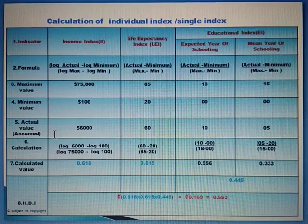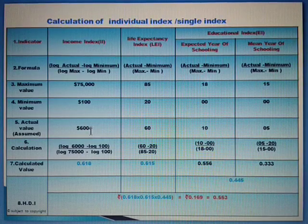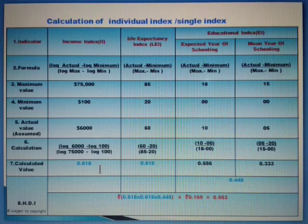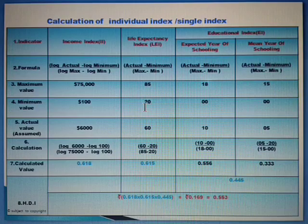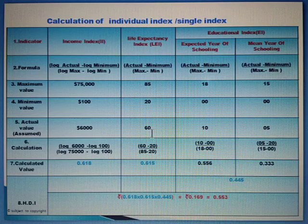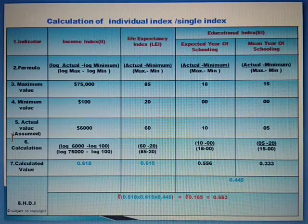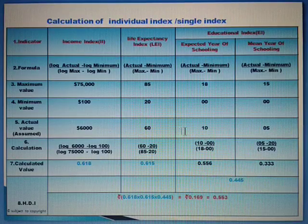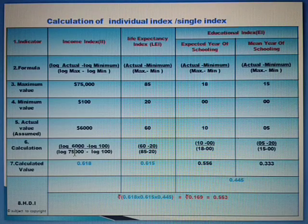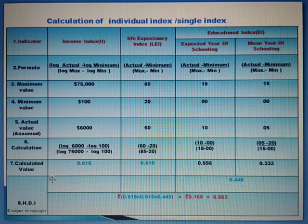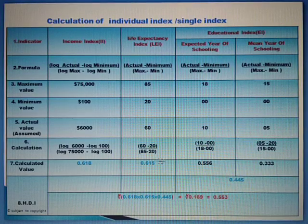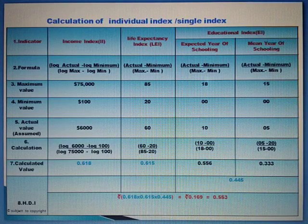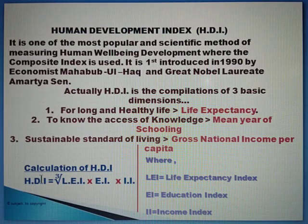With these maximum and minimum values, if we know the actual value of a particular region we can easily find out the individual index. For example, suppose a particular region has an income of $6,000. If we put this value in the actual value place, we get the Income Index, which is 0.618. Similarly, if the life expectancy of a country is 68 years, putting that value in the formula gives the Life Expectancy Index. For convenience, I have assumed values of $6,000 for income, 60 for life expectancy, and 10 and 5 for schooling years.